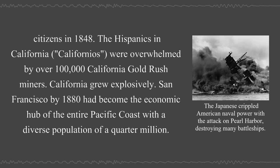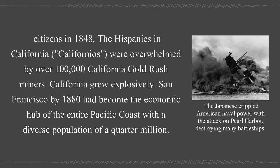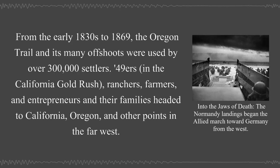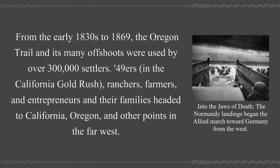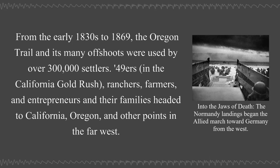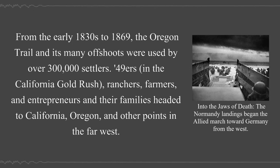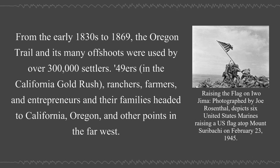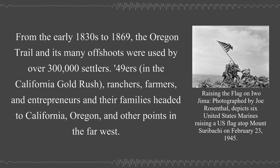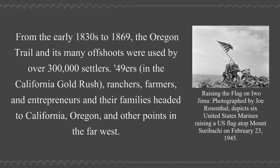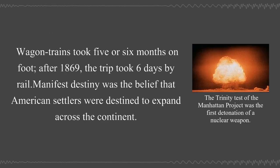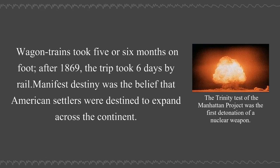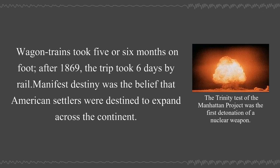From the early 1830s to 1869, the Oregon Trail and its many offshoots were used by over 300,000 settlers—49ers in the California Gold Rush, ranchers, farmers, and entrepreneurs and their families headed to California, Oregon, and other points in the far west. Wagon trains took five or six months on foot. After 1869, the trip took six days by rail.